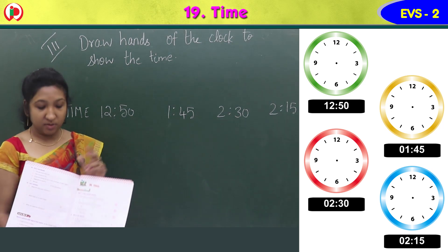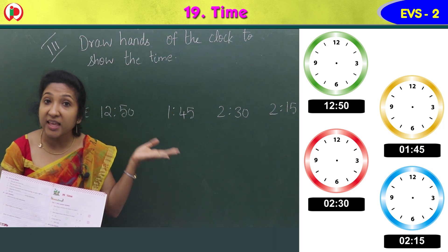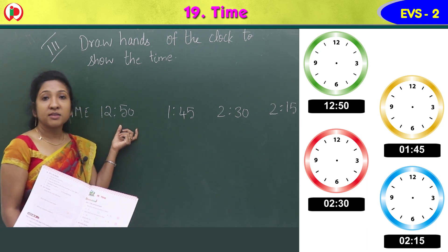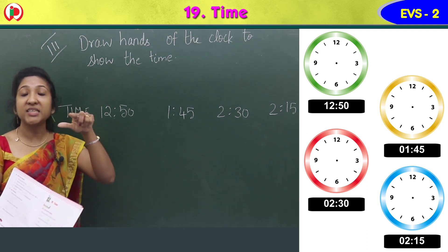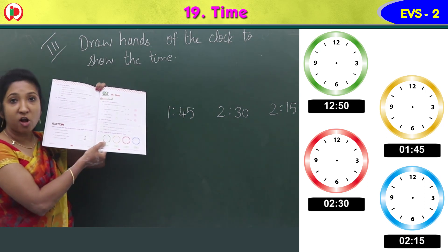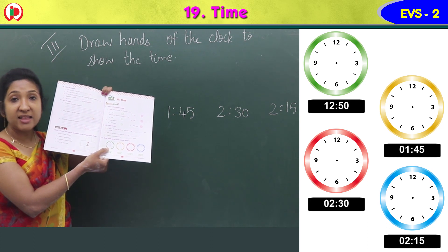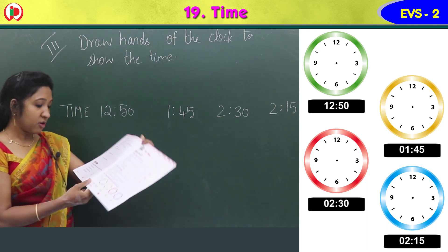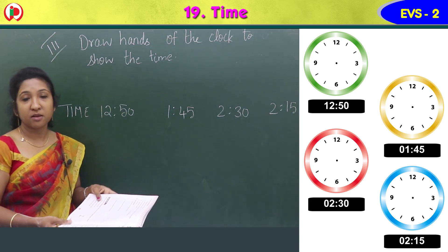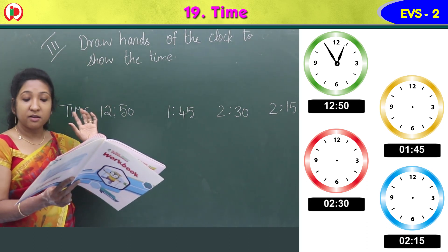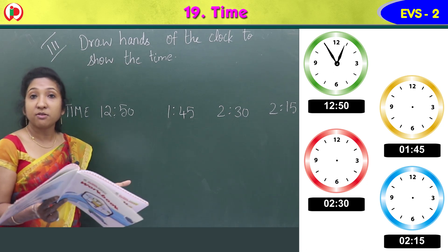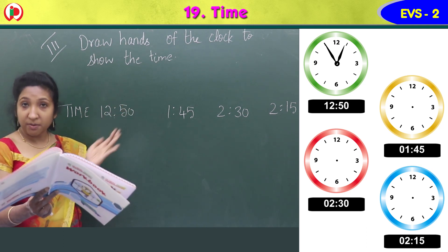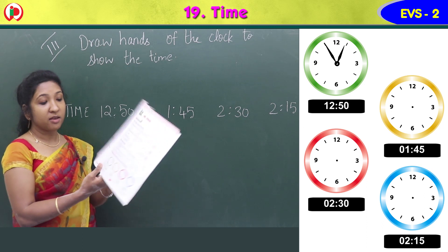Now the next exercise is exercise 3: draw hands of the clock to show the time. You can see images of clocks here. Time is given and you have to draw the minute hand and the hour hand on the clock. The minute hand is the longer one and the hour hand is the shorter one.